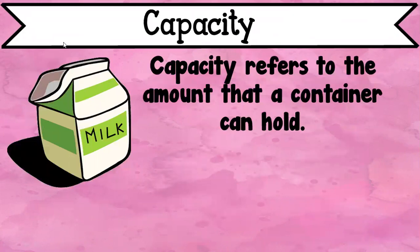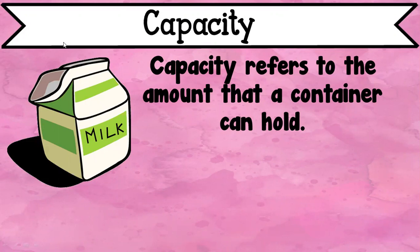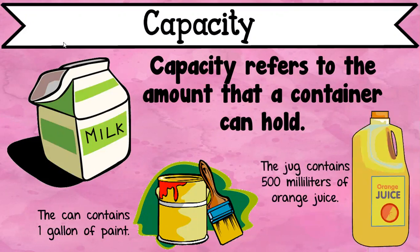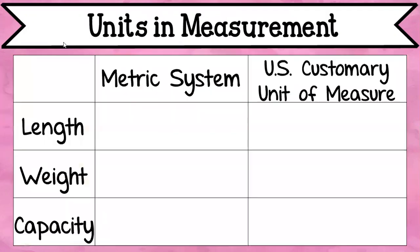Capacity — and this is something that may be newer — refers to the amount that a container can hold. If you're looking at a paint can, you can say that that paint can holds one gallon of paint. You can look at orange juice or milk inside your refrigerator and find the capacity of that; this jug contains 500 milliliters of orange juice. There are two types of units of measurement: you have the metric system and you have the US customary unit of measure.